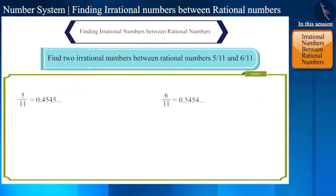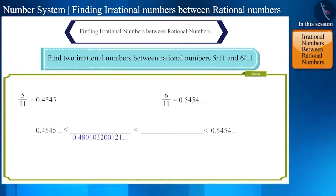Now we have to write two irrational numbers that are greater than 0.45454545 and smaller than 0.54545454. Can that decimal number be 0.480103200121 etc.? Yes. Find the second number yourself.